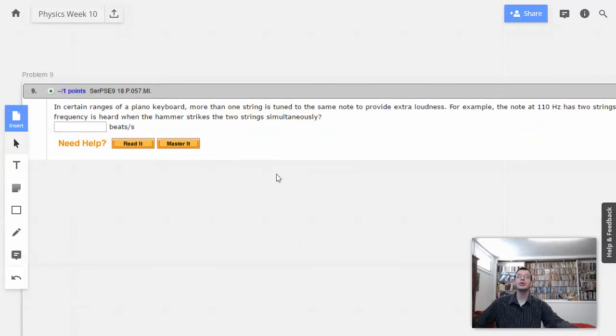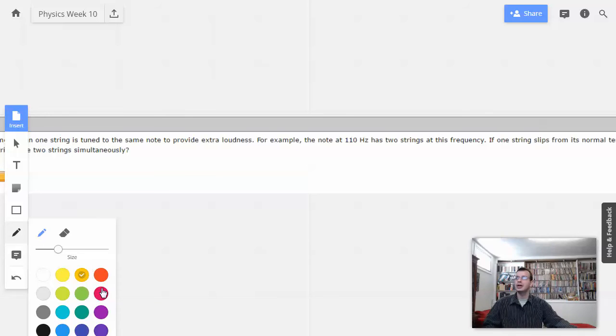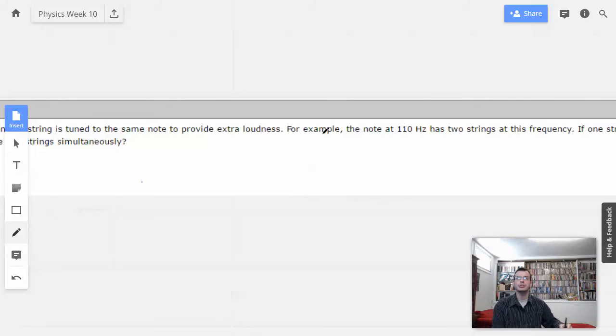Alright, so we have tension, so we need to find the frequency differences. So I'm going to start by looking at the idea that velocity equals distance divided by time, which is the same as lambda times frequency.